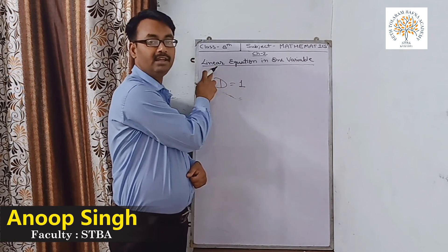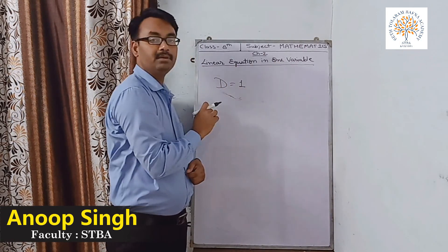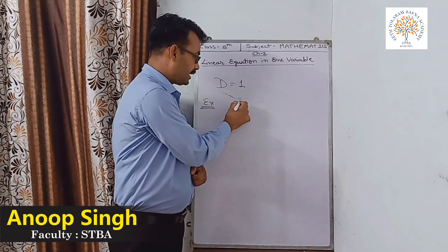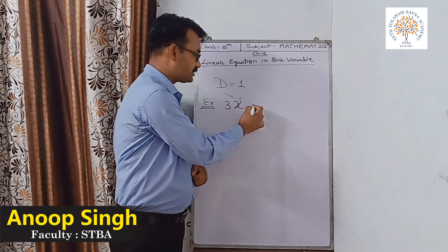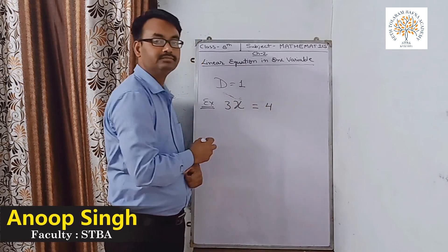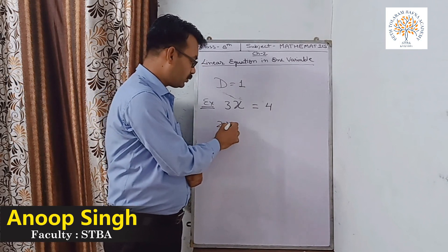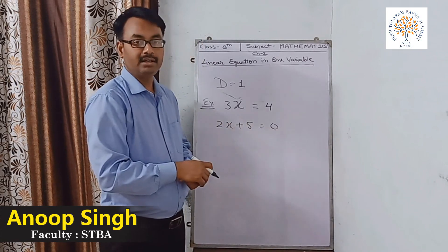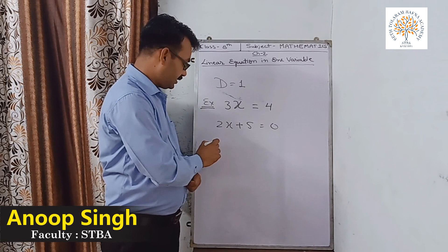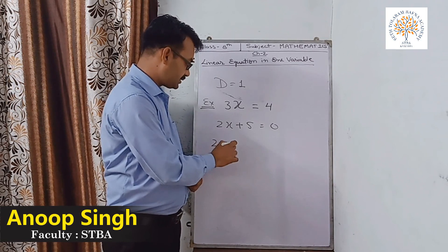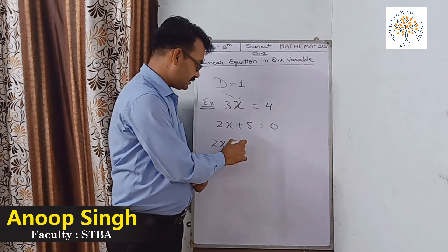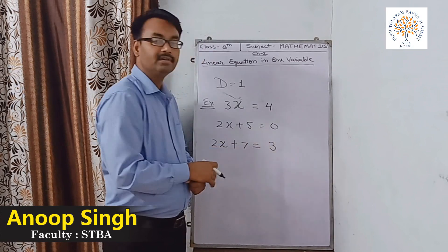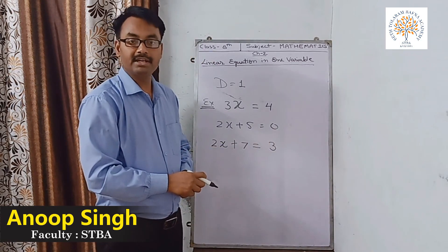An equation having degree 1 is called linear, and in one variable means there is only one variable. For example, 3X equals 4, or 2X plus 5 equals 0 — here is an equation having only one variable. Like 2X plus 7 equals 3 — this is also a linear equation in one variable.